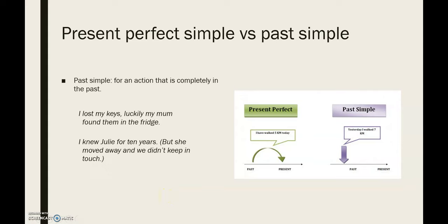Dus even de vergelijking tussen de present perfect simple en de past simple. De present perfect simple heeft nog steeds invloed nu. De past simple is iets dat over is, gedaan is. Bijvoorbeeld bij de sleutels: ik verloor mijn sleutels, maar mijn mama heeft ze in de kast gevonden — ik heb ze terug, dus het heeft geen invloed meer op de tijd nu. En bij Julie: ik kende haar 10 jaar lang, maar ze is nu verhuisd en we hebben geen contact meer. Je ziet hier een zeer duidelijke afbeelding — dus het heeft nog invloed, of het is helemaal voorbij.